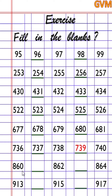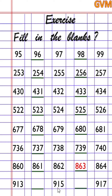Next is 860, 862, and 864. Between 860 and 862 the missing number is 861. Between 862 and 864 the missing number is 863. The last set is 913, 915, and 917. Between 913 and 915 the missing number is 914. Between 915 and 917 the missing number is 916.